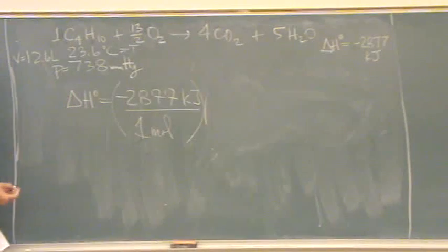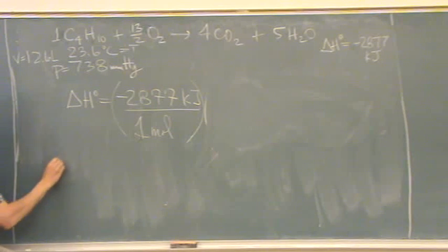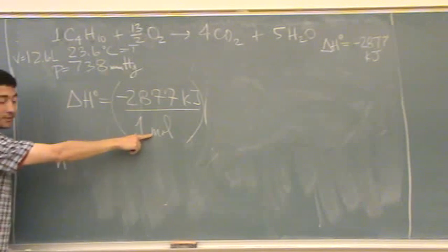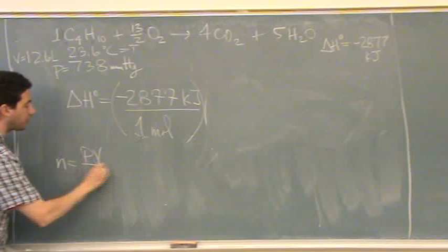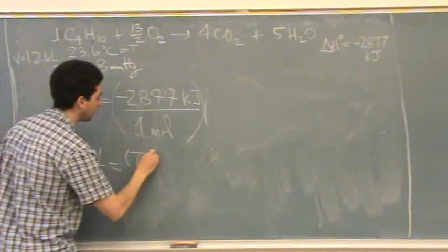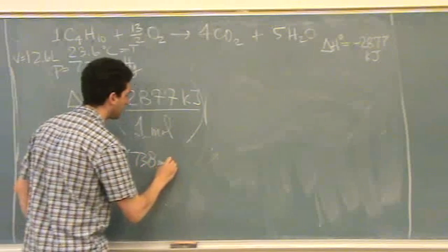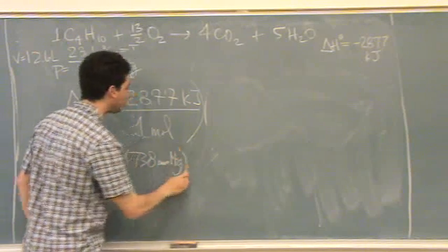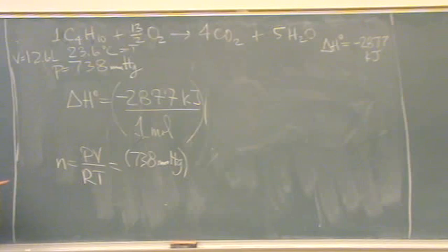You're just going to work, I'm going to work right below here. And I'll say, I need to know moles. Right? I need to know moles. So moles is PV over RT. P is 738 millimeters of mercury. What units do I need? Not that. ATM.